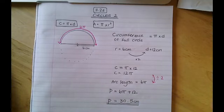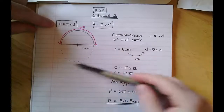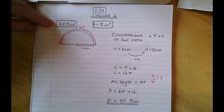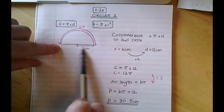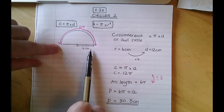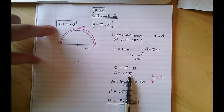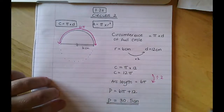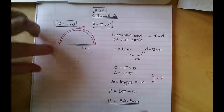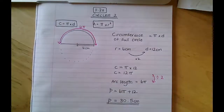Let me recap. I used the circumference formula — imagining a full circle with diameter 12 (since radius is 6, doubled). The circumference of the full circle would be 12 pi. But I only have half a circle, so I halved that to get 6 pi for the arc length. Then I added the diameter of 12, converted to a decimal, and got 30.5 centimetres.